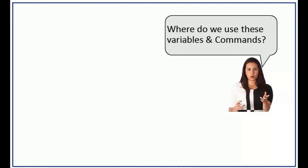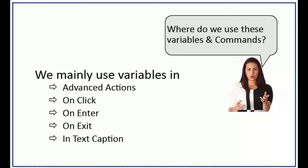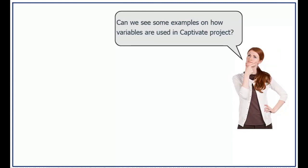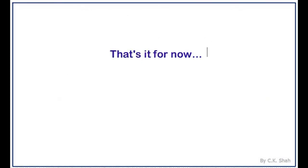Where do we use these variables and commands in the program? We mainly use variables in our advanced actions — on the click event of a button, on enter of the slide, on exit of the slide, and sometimes also in text captions. Can we see some examples of how variables are used in a Captivate project? Sure, but in the next session. That's it for now.